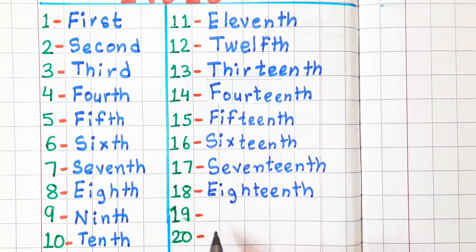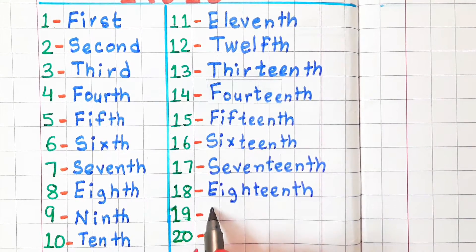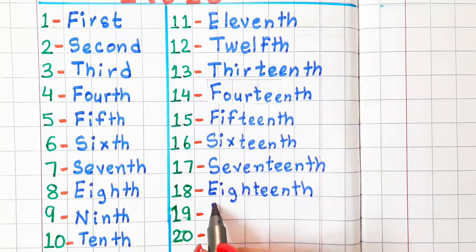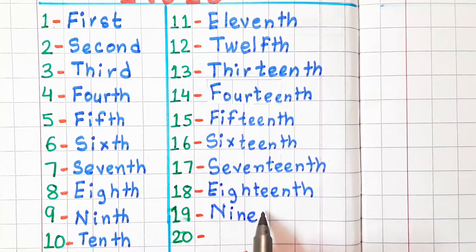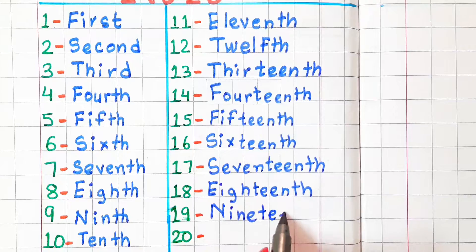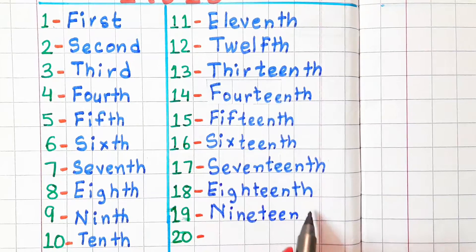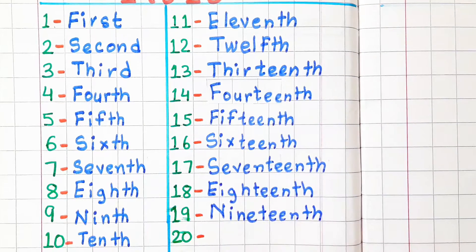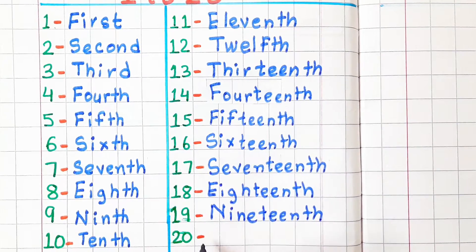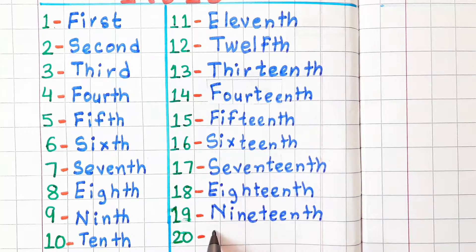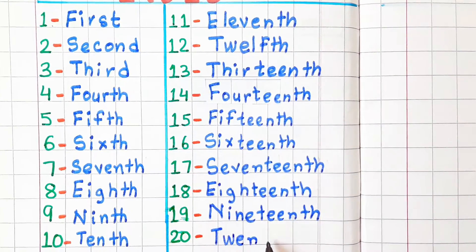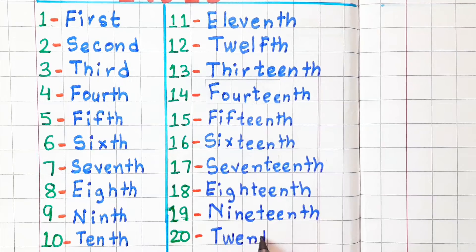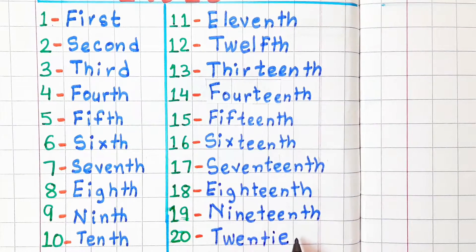19 — in ordinal number, it is called nineteenth. Spelling is N-I-N-E-T-E-E-N-T-H. 20 — in ordinal number, it is called twentieth. Spelling is T-W-E-N-T-I-E-T-H.